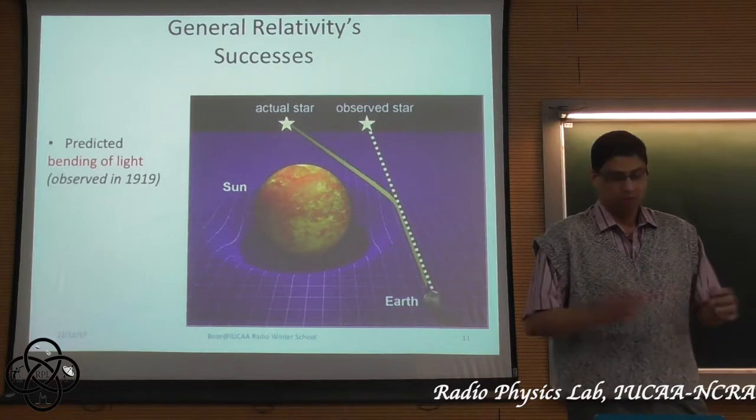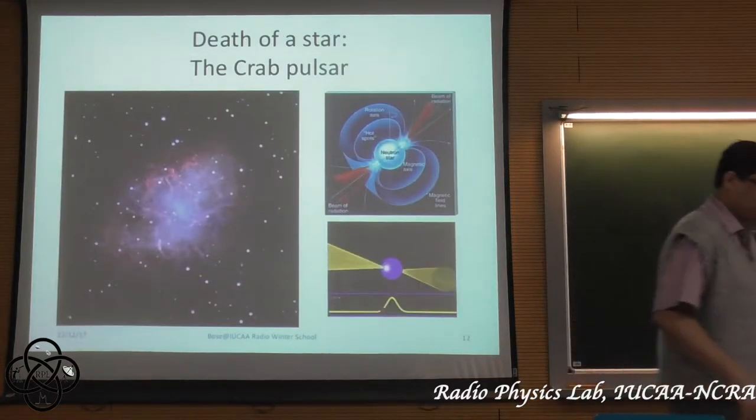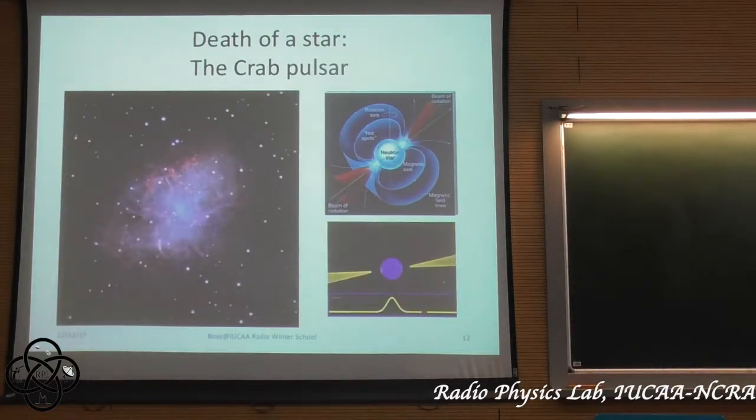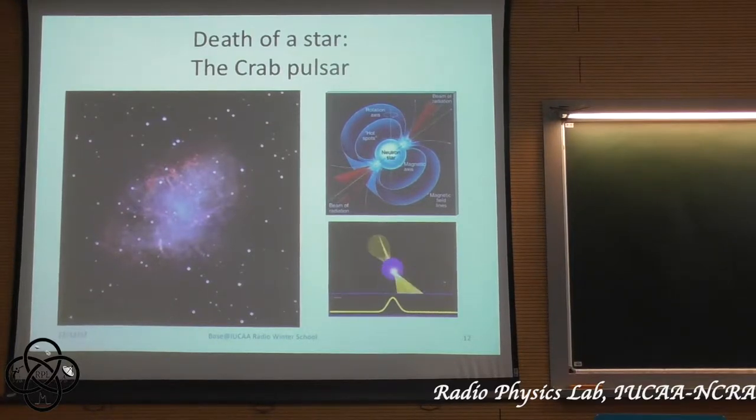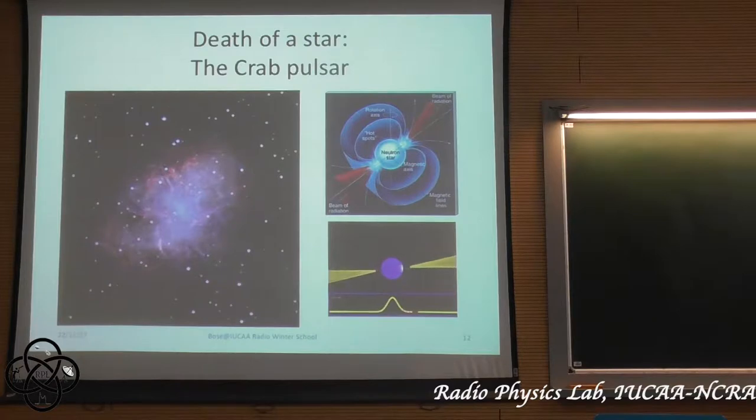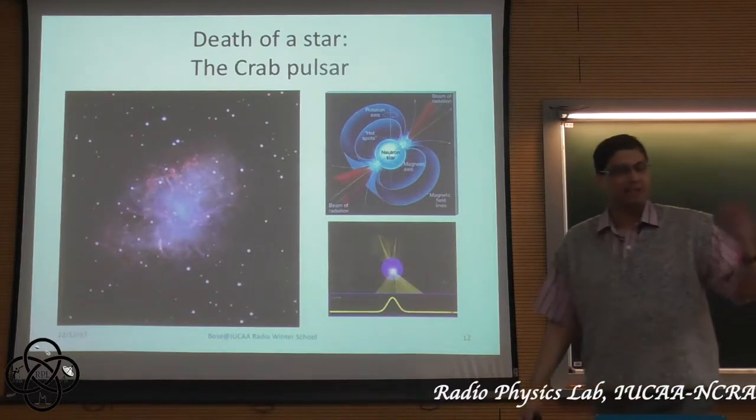You know that the global positioning system uses the fact that the clocks don't travel at the same rate, close to the Earth and far from the Earth. So, you correct for this general relativity effect, right? To be able to find your location correctly. So, general relativity is being used in day-to-day life now. Not gravitational waves, but who knows? What is in store for the future?